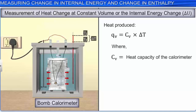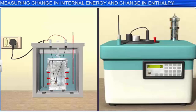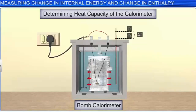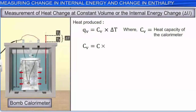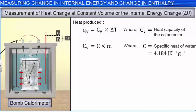The sample is ignited electrically, and the heat produced by the combustion reaction is absorbed by the water surrounding the bomb. The increase in temperature of water, delta T, is noted, and the heat produced is calculated using: QV = CV × delta T, where CV is the heat capacity of the calorimeter. The heat capacity of the calorimeter is determined separately by igniting a known amount of a substance whose heat of combustion is already known. CV = C × M, where C is the specific heat of water (4.184 J/K/g) and M is the mass of water.